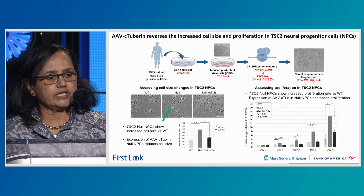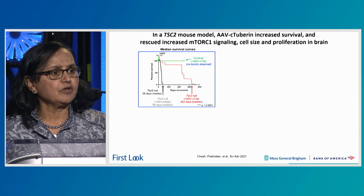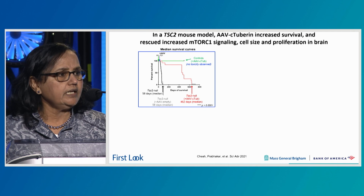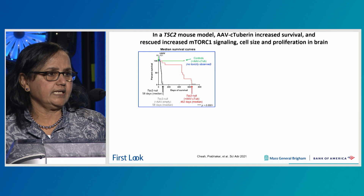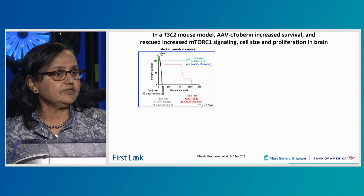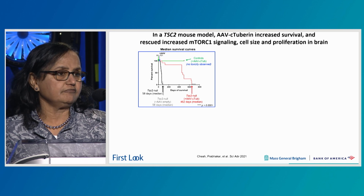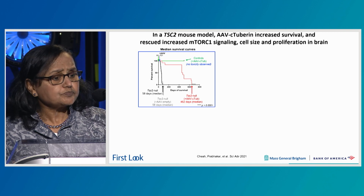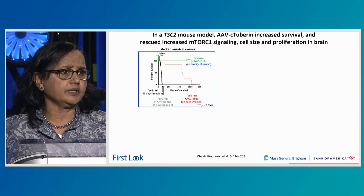We went on to test a mouse model generated in Zander Brickfield's lab, where a TSC2-floxed animal is given Cre at P0. These animals die around 58 days — the median survival is 58 days. When you give AAV C-tuberin, survival is extended to 462 days following a single IV injection of AAV C-tuberin.